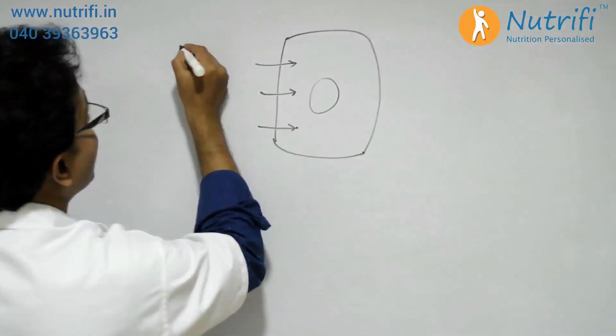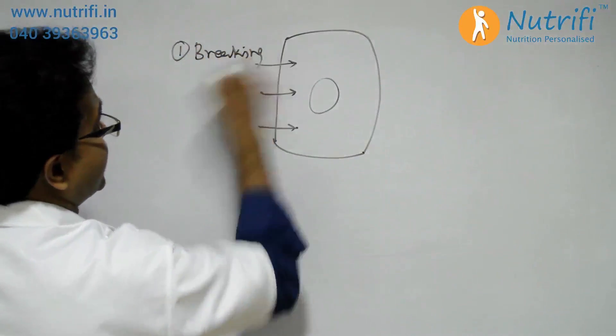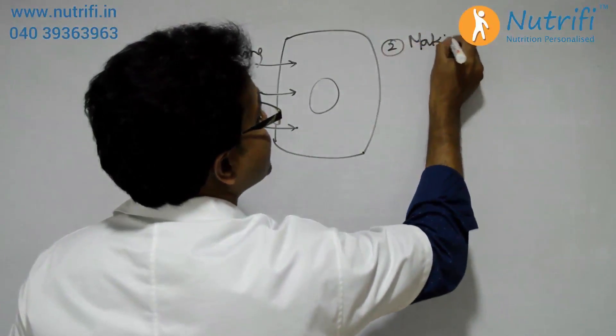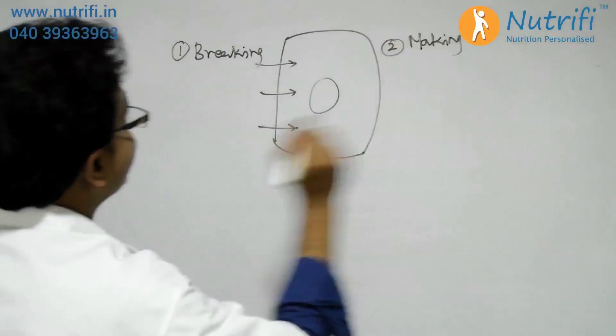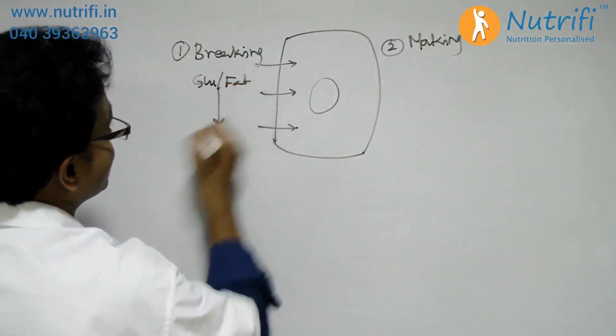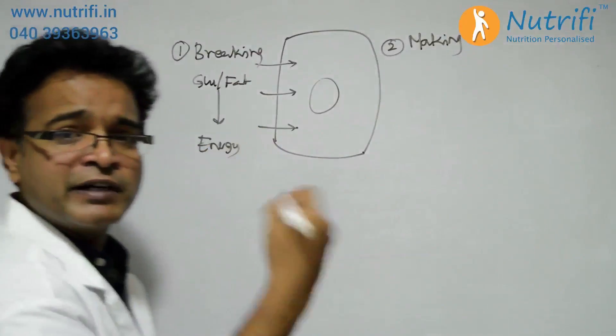two fates: one is breaking down nutrients to release energy, or making something else which the body requires from the nutrients. For example, glucose and fat get broken down to release energy. In this process, carbon dioxide and water are produced. In the same way, the protein or amino acid that is entering into the cell